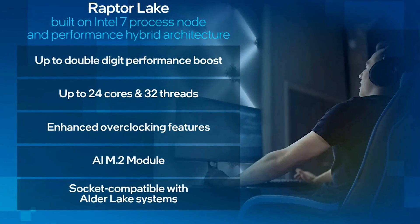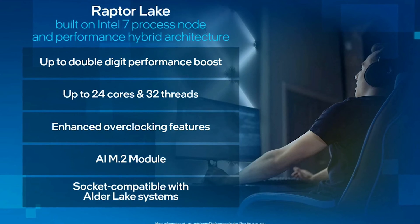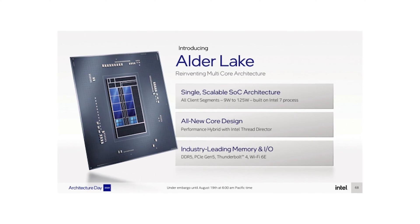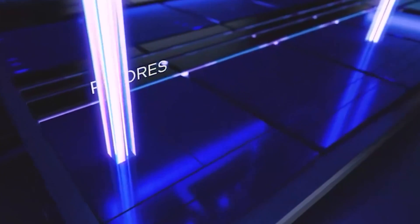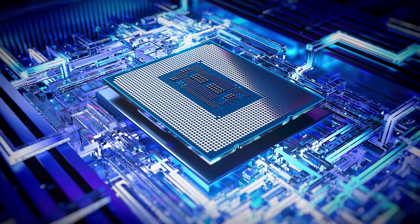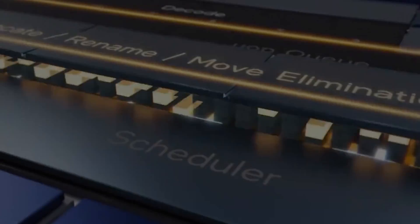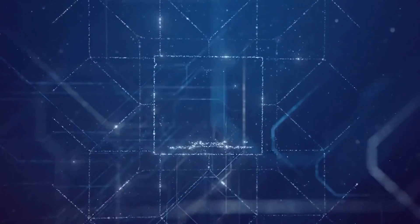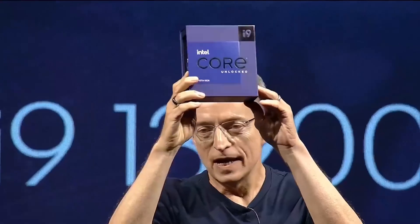Talking about the architectural differences, the 13700K features the latest Raptor Lake architecture and the 12900K boasts the Alder Lake architecture. While Alder Lake processors may be some of the best gaming CPUs around, the Raptor Lake chips are evidently faster. They are designed on the Intel 7 process and have a 15% gain in single-threaded performance and a 41% gain in multi-threaded performance compared to Alder Lake, giving an amazing overall 40% performance scaling.